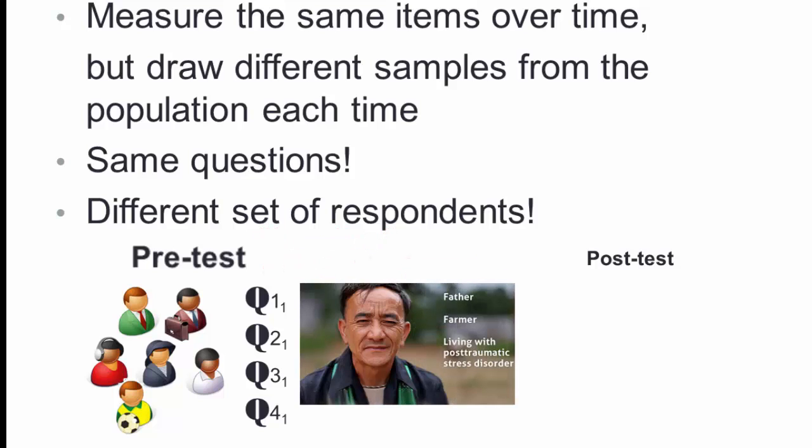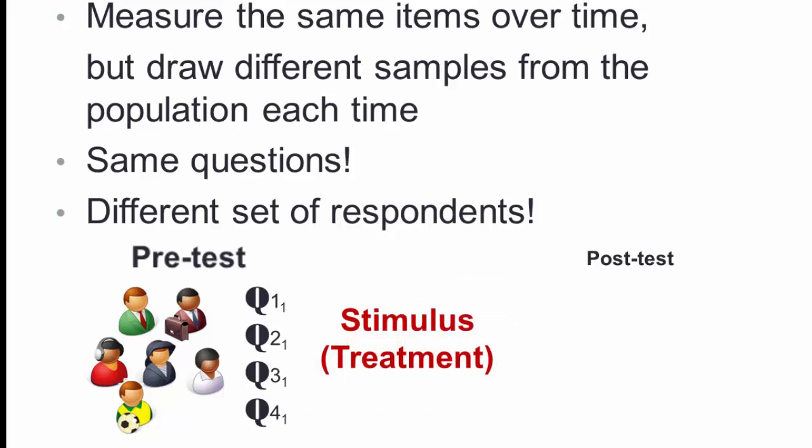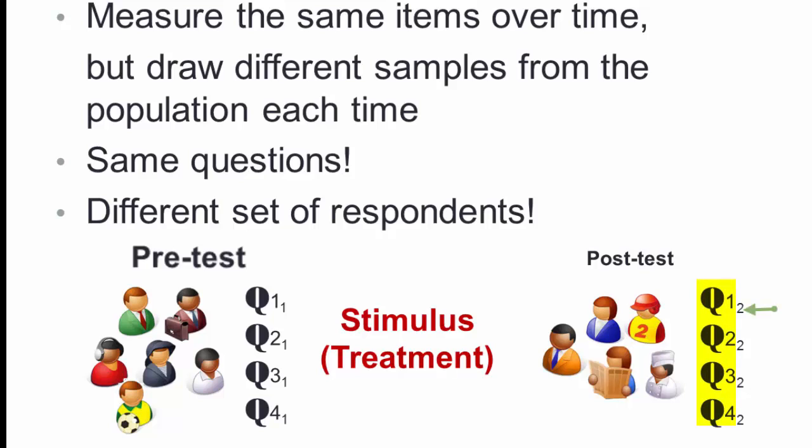Then the campaign occurs, or in scientific terms, the stimulus, or the treatment, is introduced. After the campaign, we then conduct the survey again, selecting another sample of the population, different people than who were interviewed the first time. We ask them the same questions we asked in the first survey, and I'm designating them sub two, to identify these as coming from the second time in the series, the post-test.